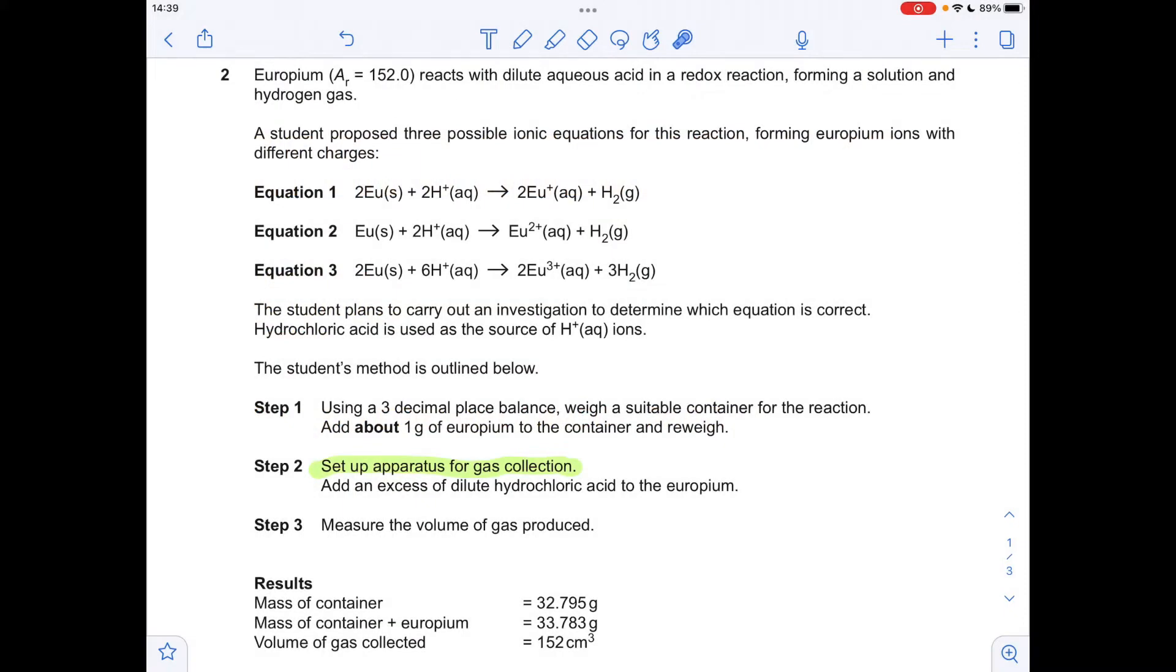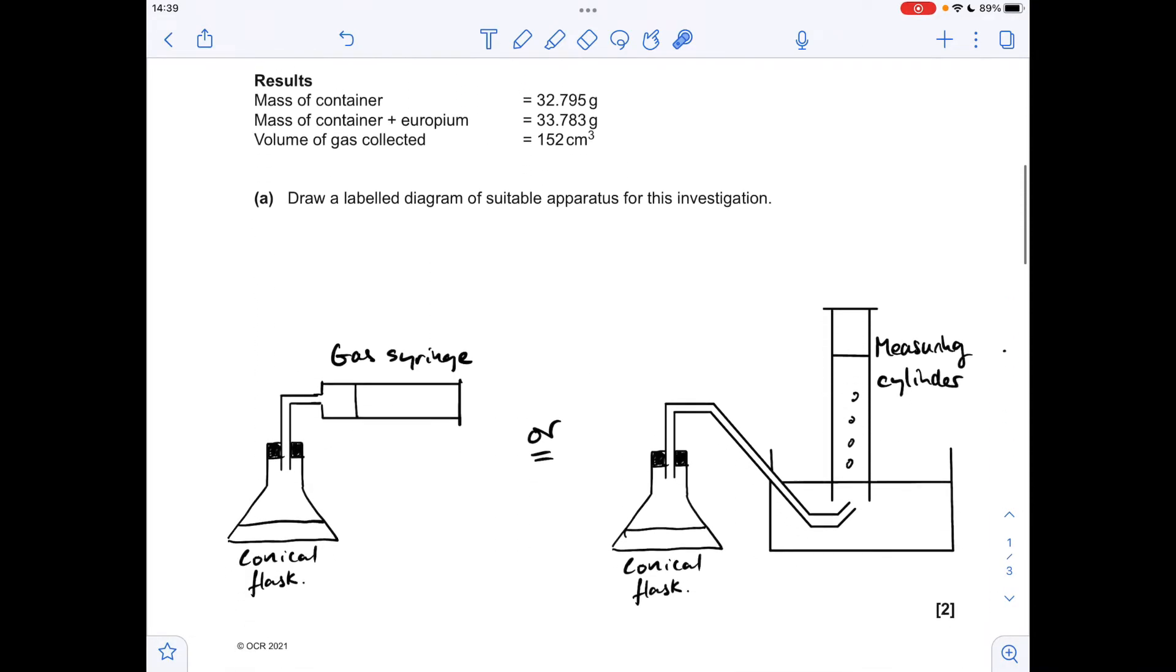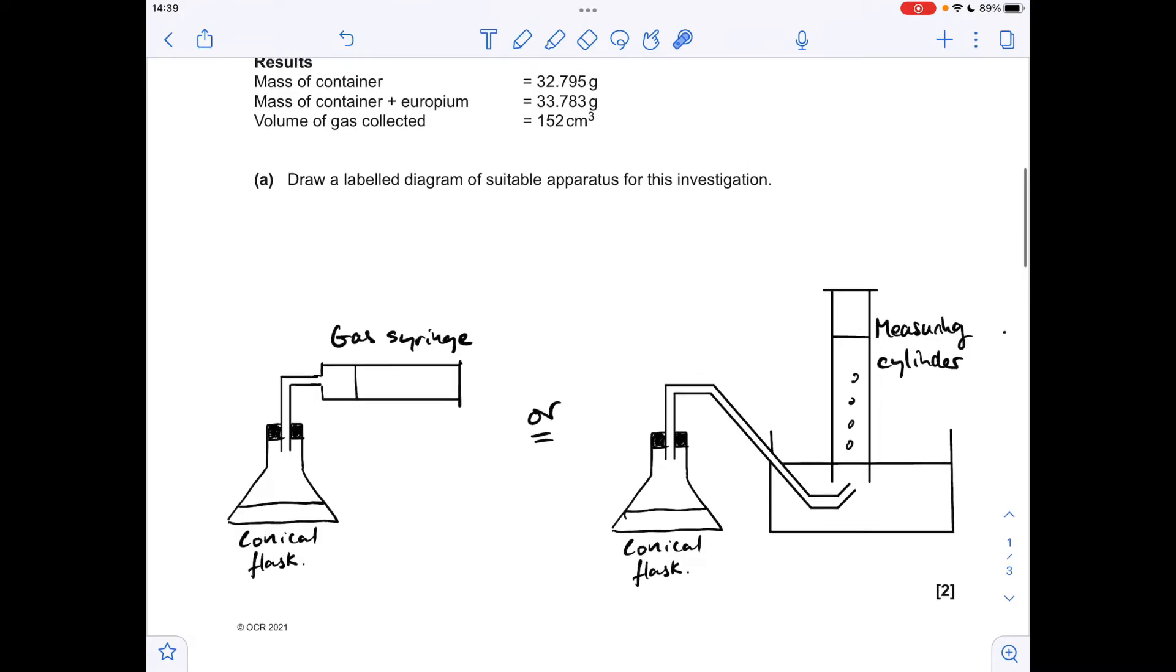Okay so make a start. You'll notice I've highlighted this line in step two: Set up apparatus for gas collection. That's because in part A we've got to draw a labeled diagram for suitable apparatus.